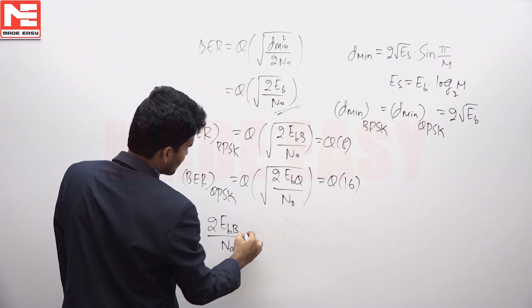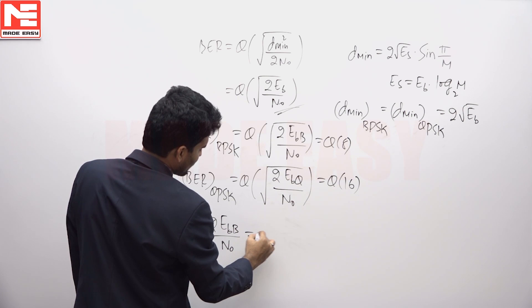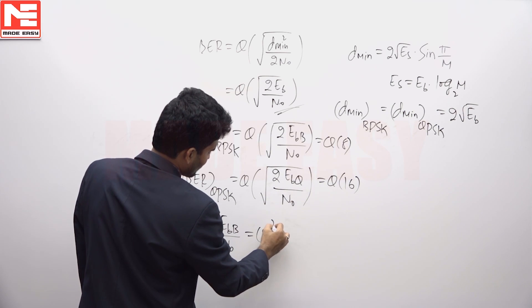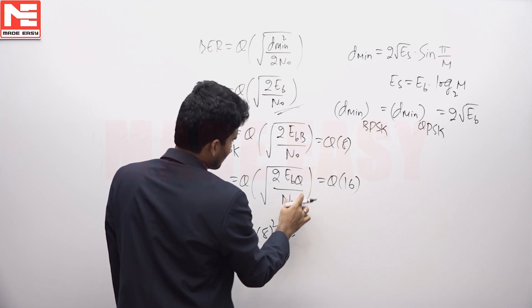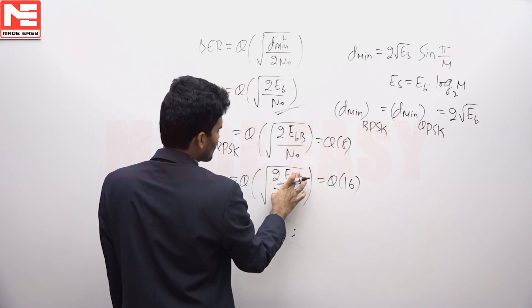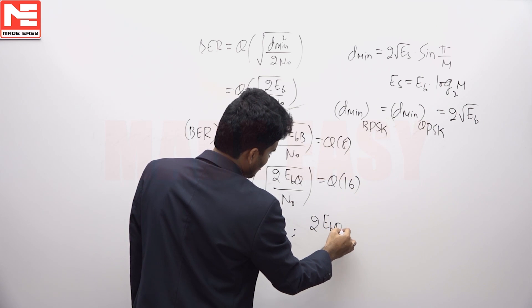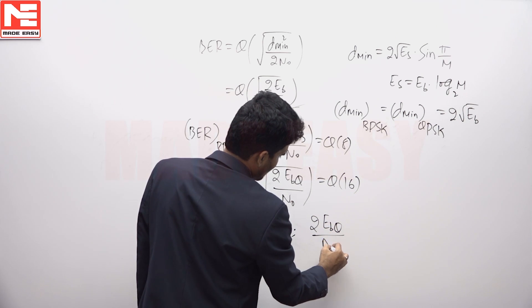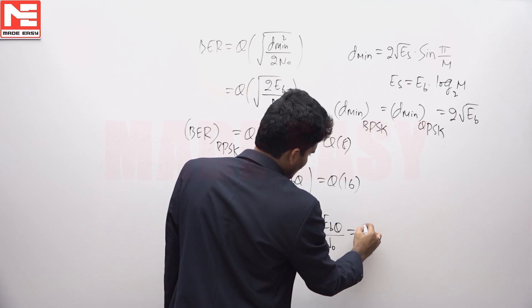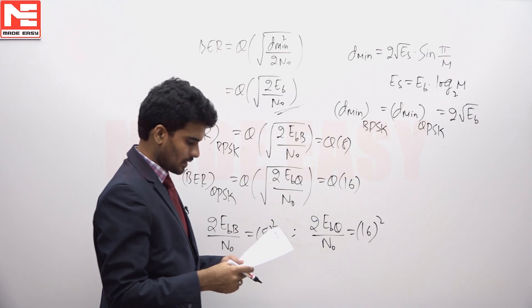Here also Q of Y1 equals Q of Y2, so Y1 equals Y2. You can write 2 EBQ by N0 equals 16 squared.